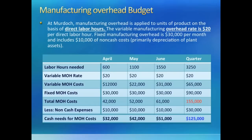Starting with direct labor hours needed each month — which we just calculated in the direct labor budget — we multiply the hours in each month by the variable manufacturing overhead rate of $20 to get total variable overhead costs. Then we add the fixed lump sum for each month and get to total manufacturing overhead costs of $155,000. But we are not done yet because we have to deal with depreciation first. Depreciation is an accounting charge to cover yearly use of machinery but it is not a payment to be made to any external party.